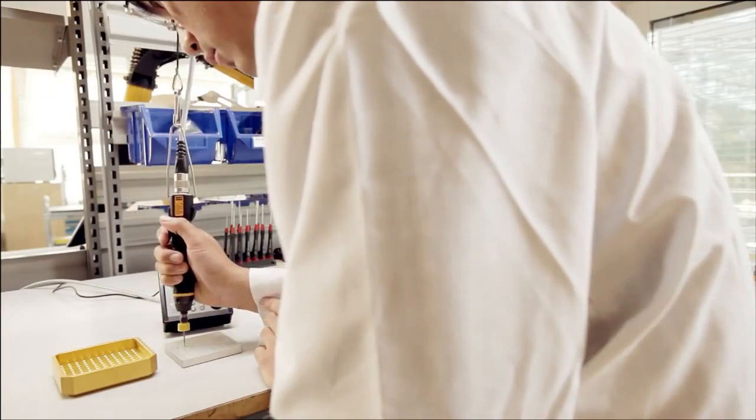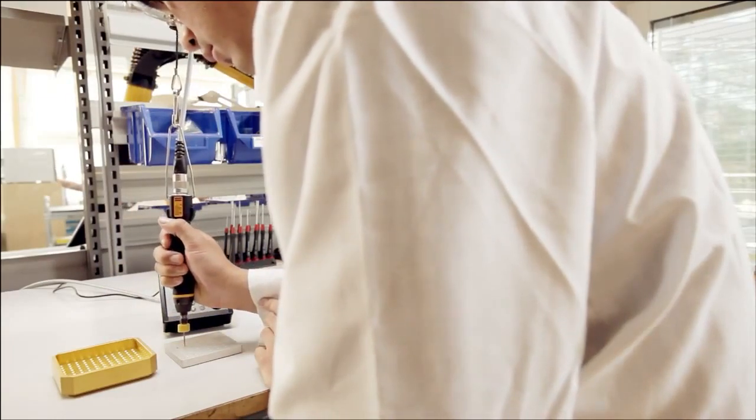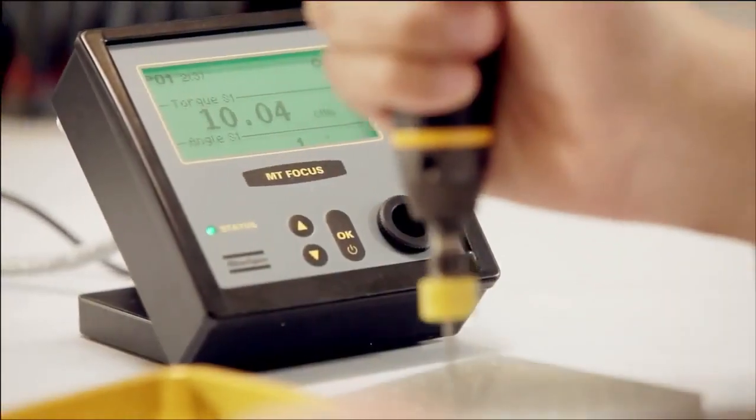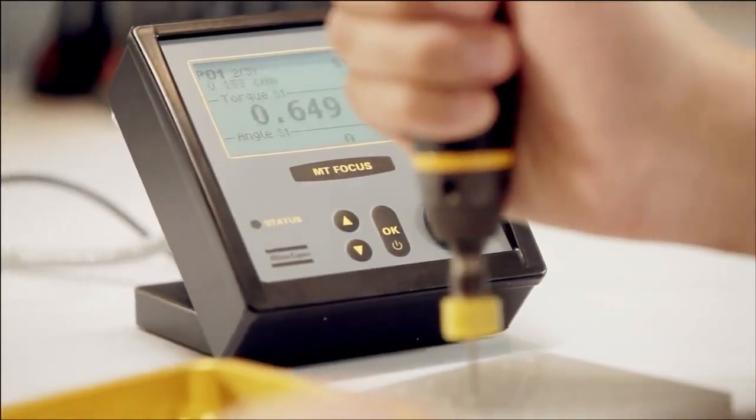The controller comes in two versions: Basic, where you can program one P-set, and Advanced, with three P-sets. Batch count is available on both versions.